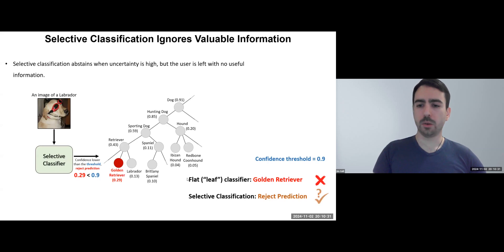But here, the model was still confident it's a dog, so selective classification ends up discarding valuable information.